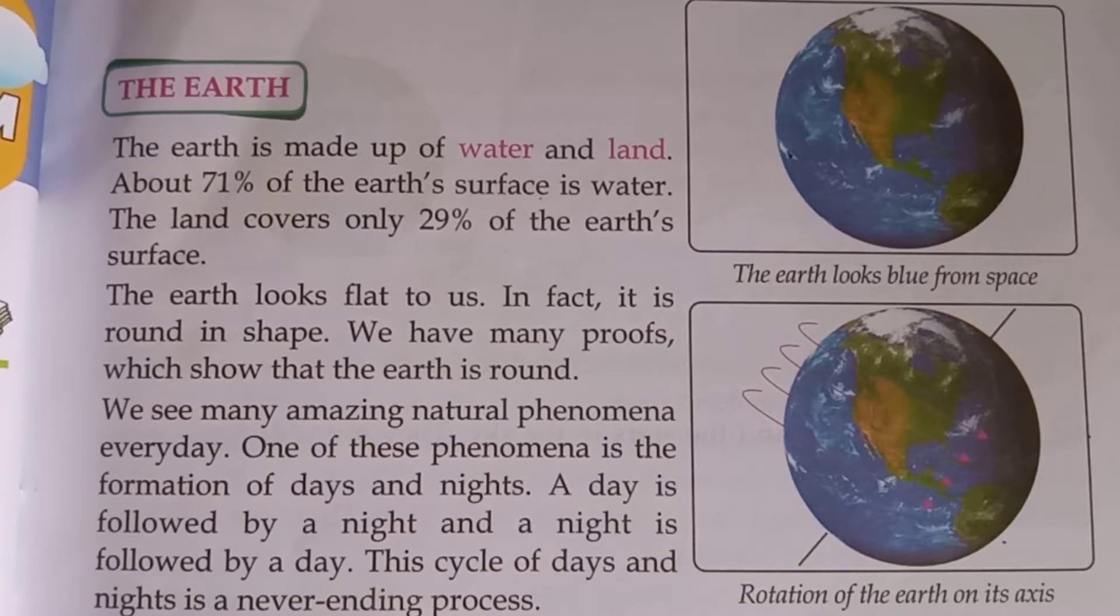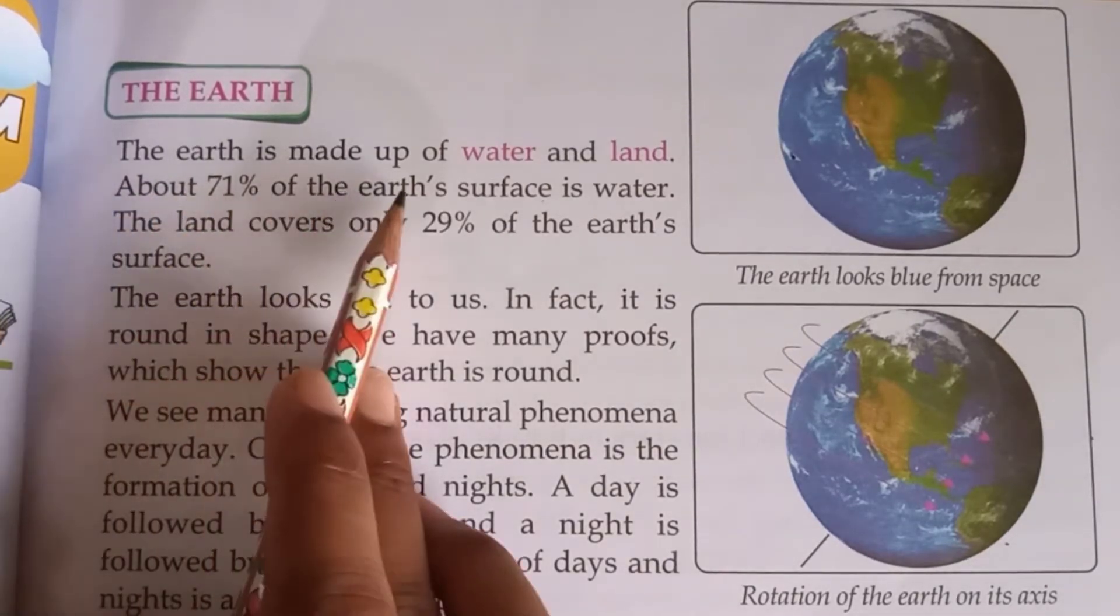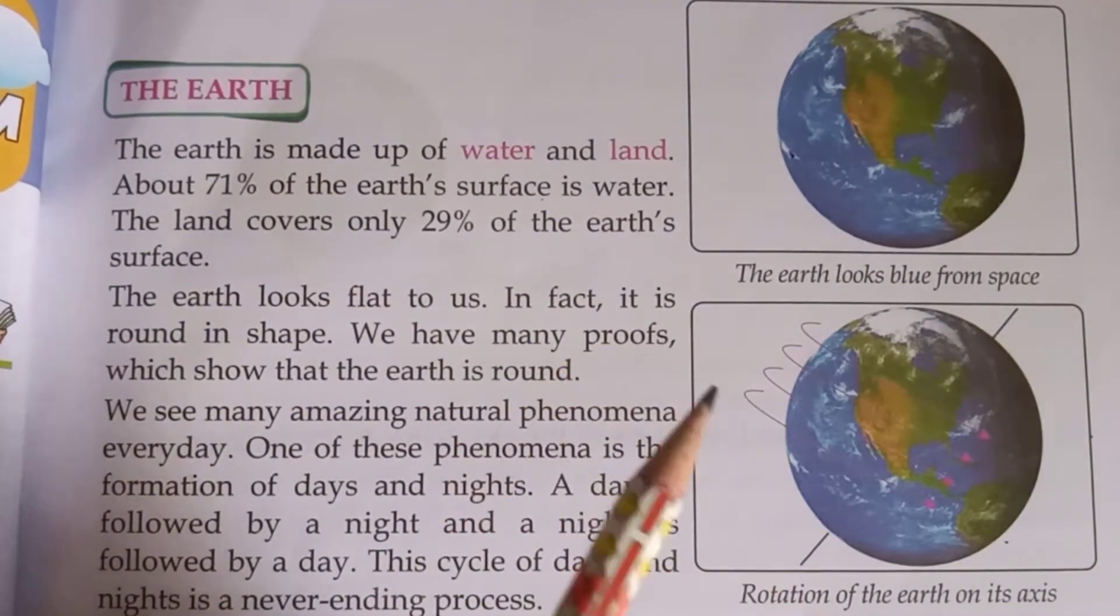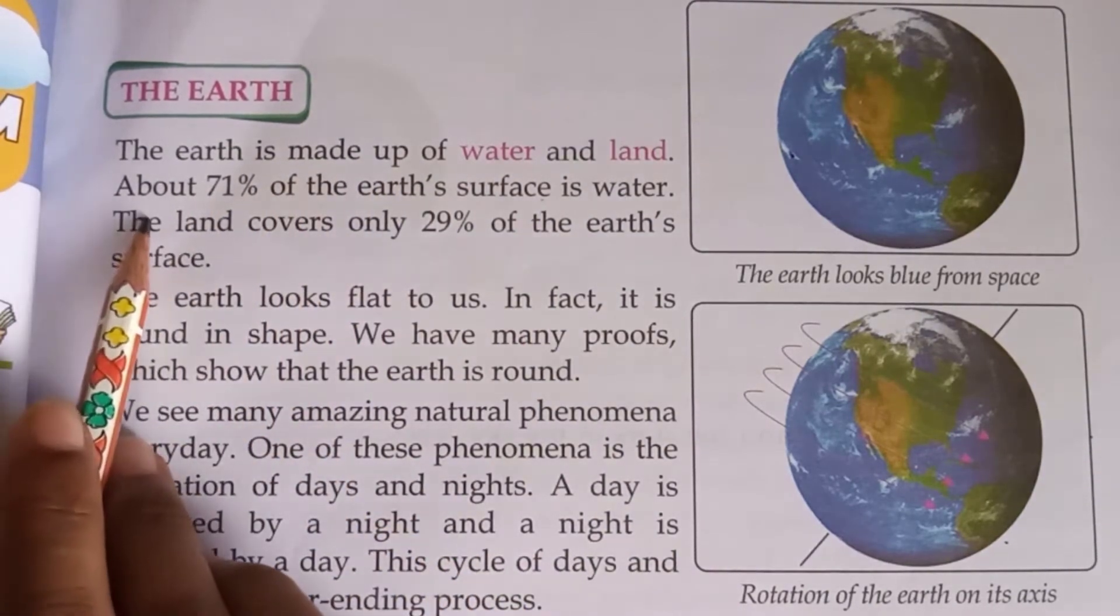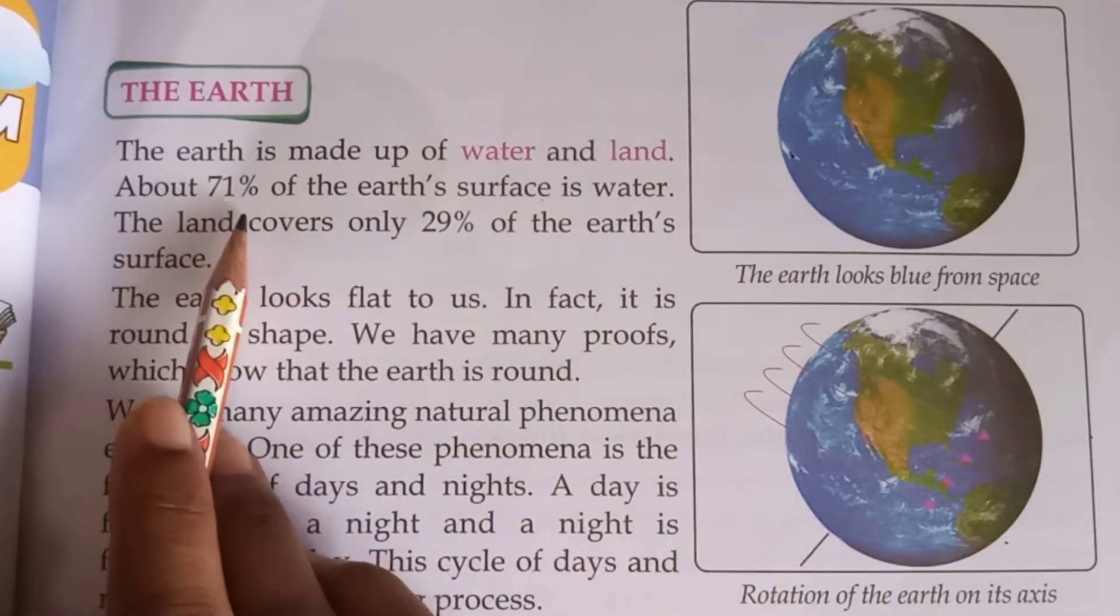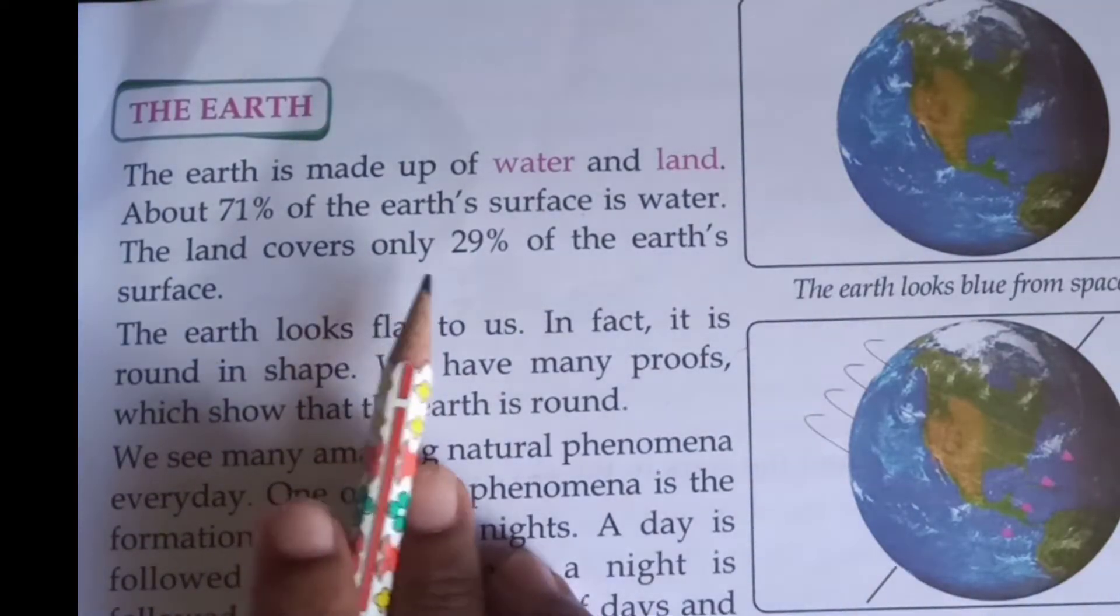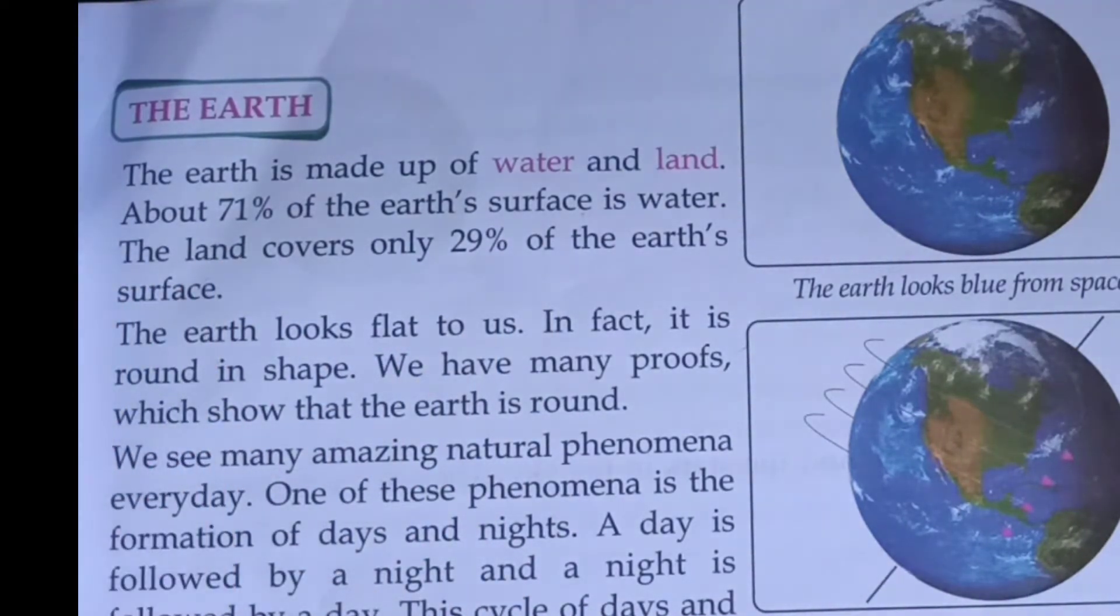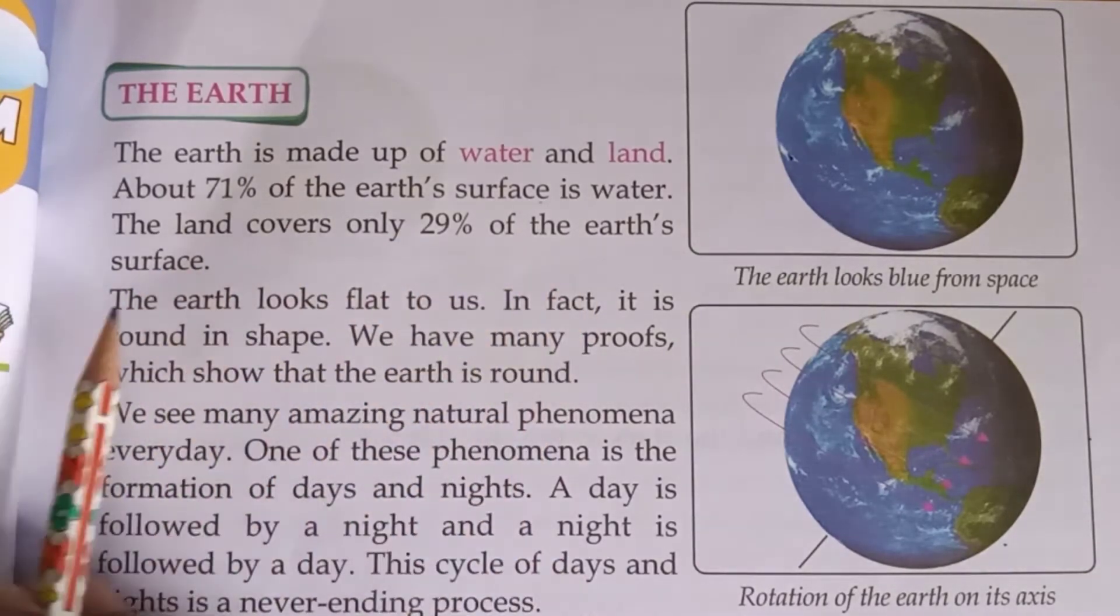In this video, we will know about the Earth. The Earth is made up of water and land. Earth, water aur land se bani hui hai. About 71% of the Earth's surface is water. Prithvi ki satah per lagbhag 71% hissa paani ka hai. The land covers only 29% of the Earth's surface. Land Prithvi ki satah ka keval 29% bhaag shaamil hai.